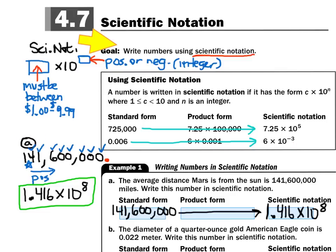Let's do example A. The average distance Mars is from the Sun is 141,600,000 miles. Write this number in scientific notation. The first thing I'd tell you to do is write it out exactly as given. Then grab your red pen and put a big decimal point at the end of the number. Then grab your blue pen and put a star anywhere in that number to form a number between $1 and $9.99. I'd put my blue star right here between the 1 and the 4.